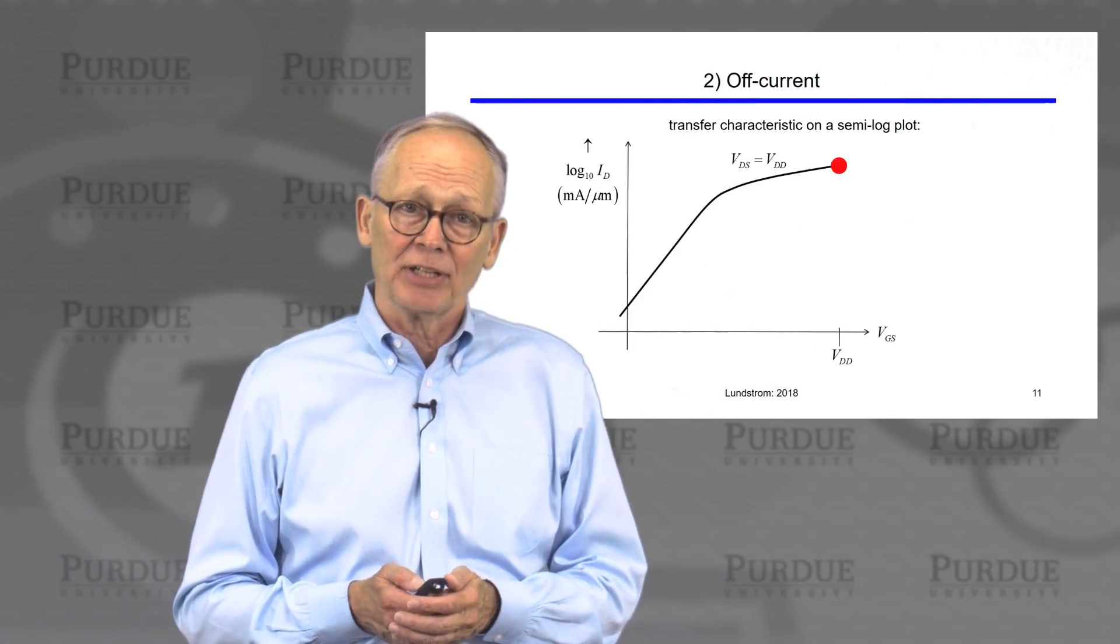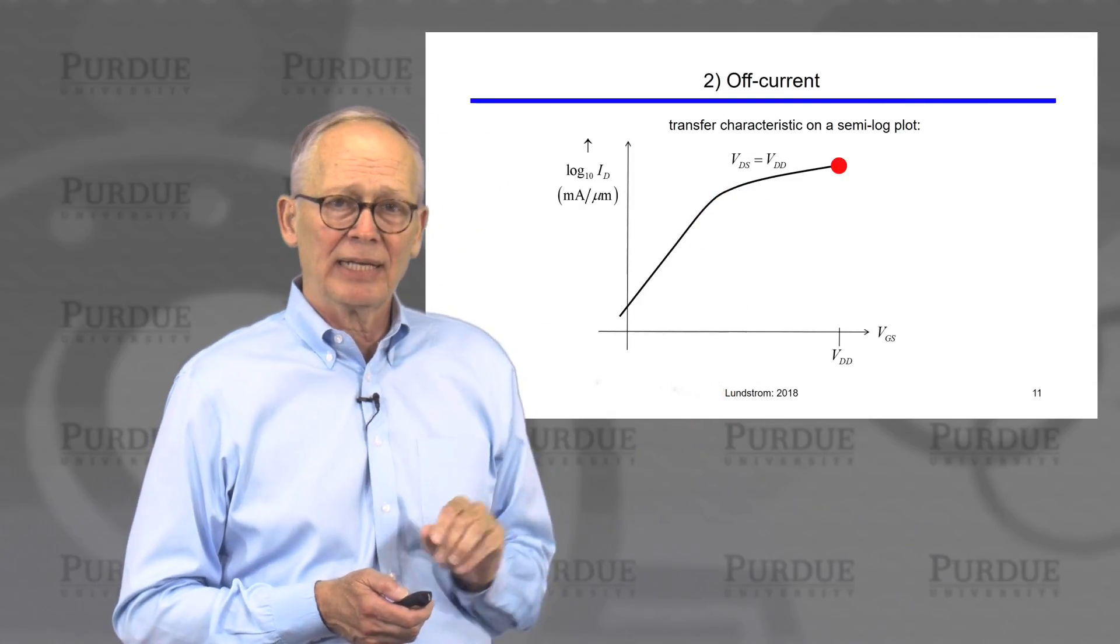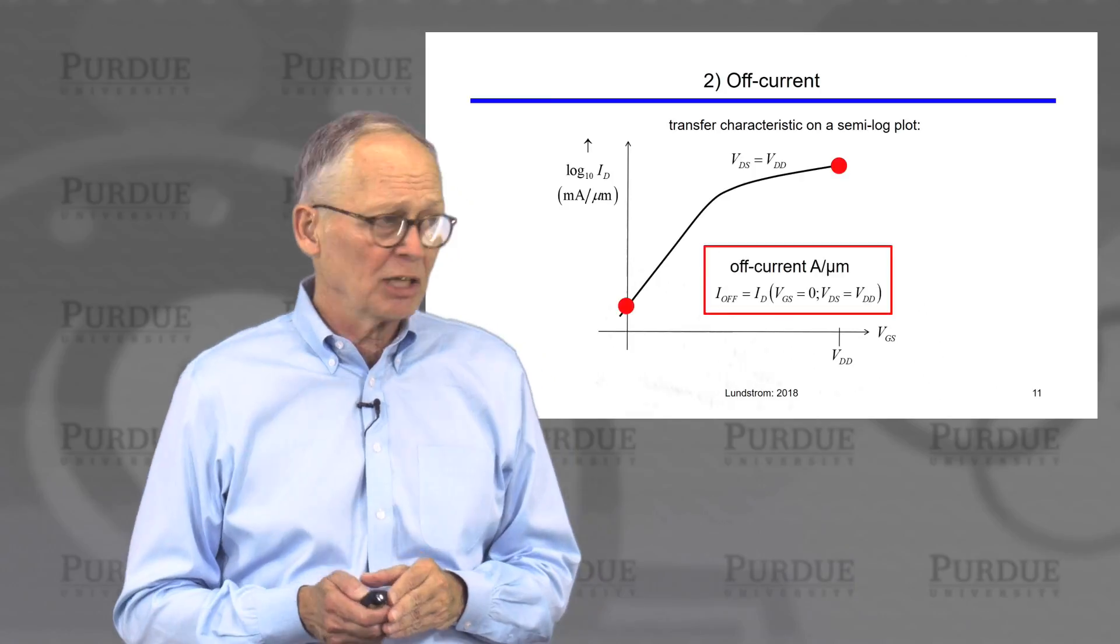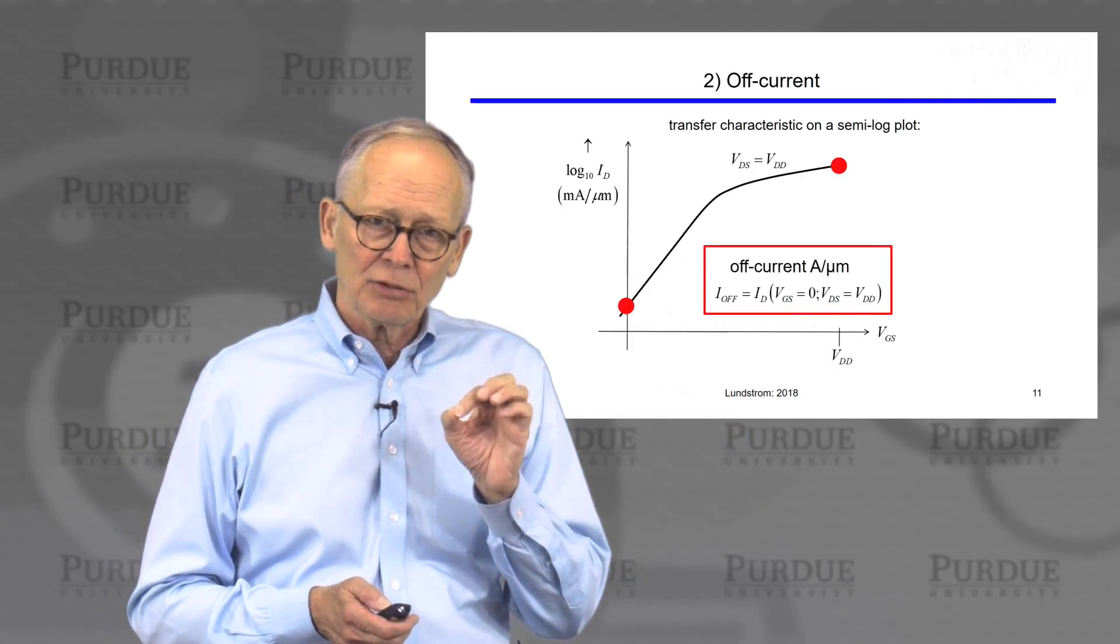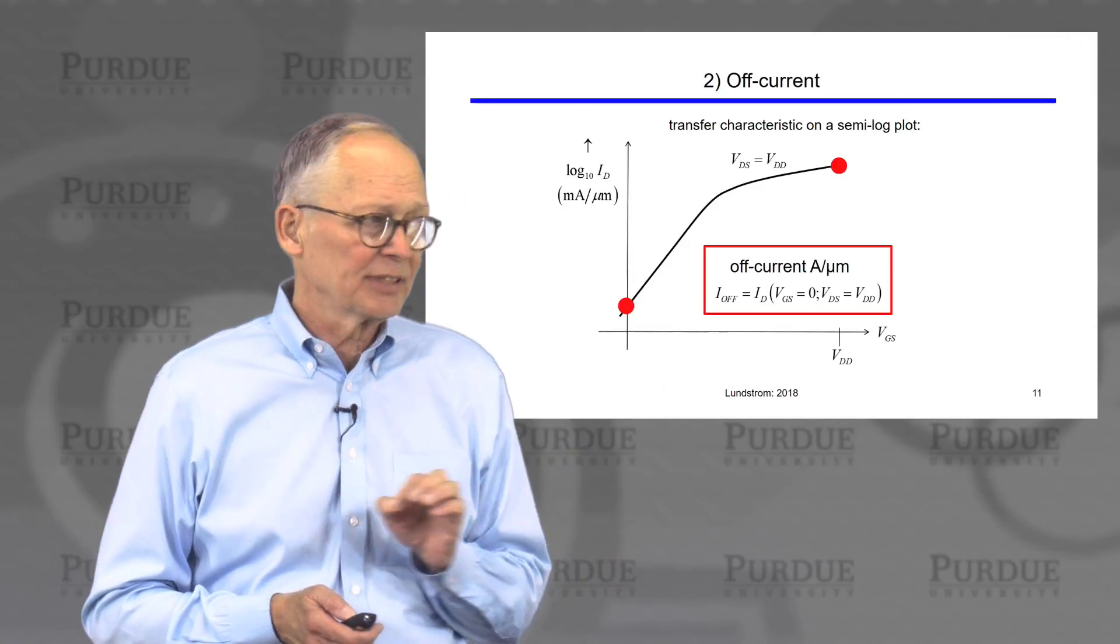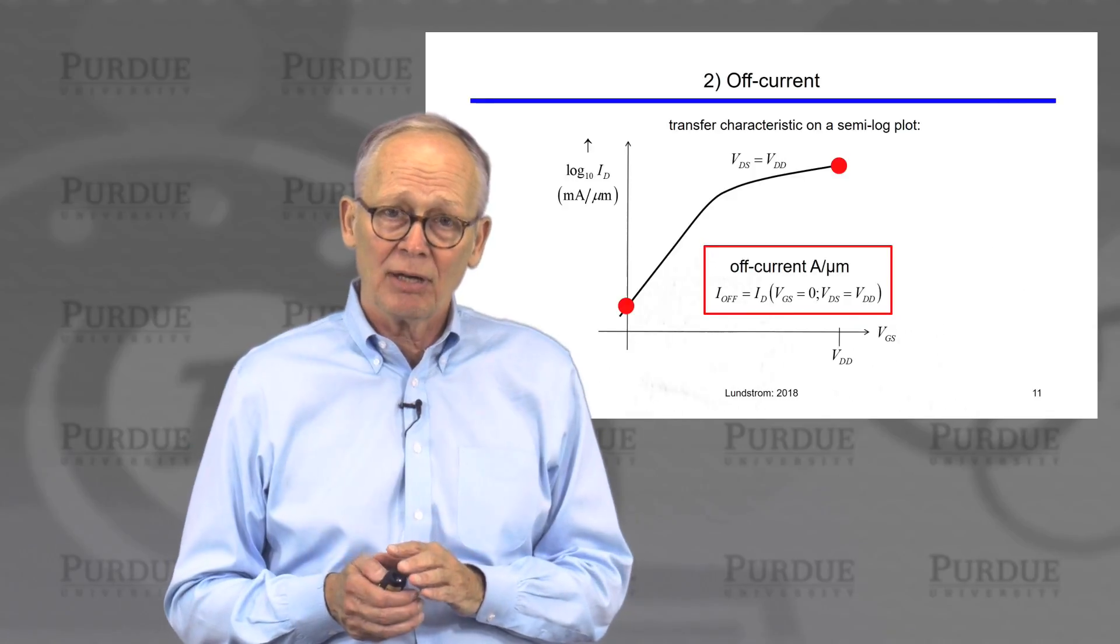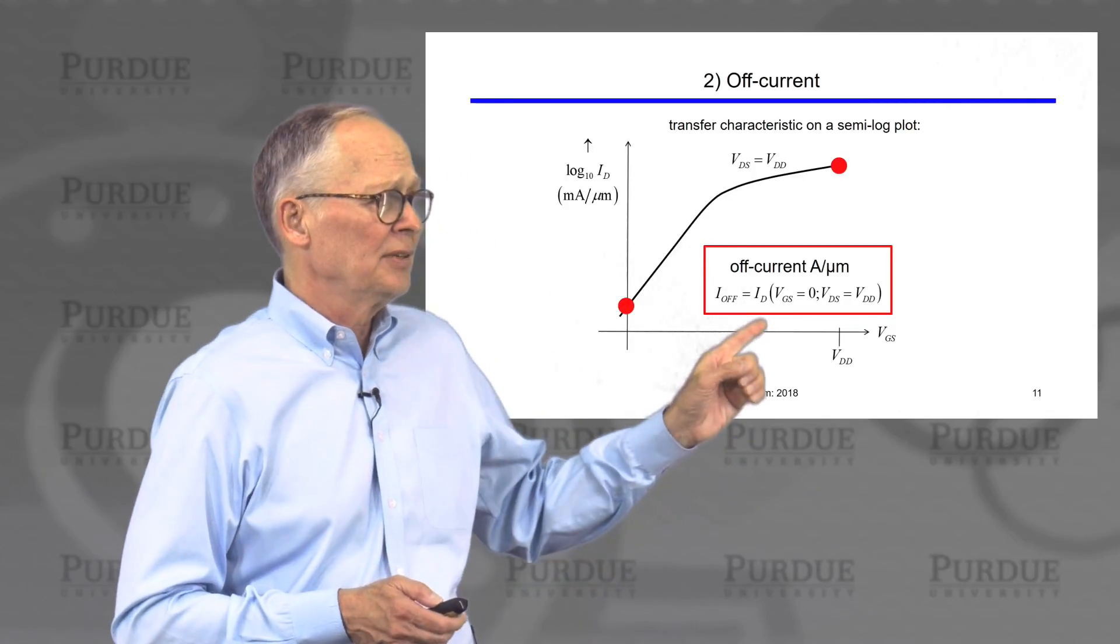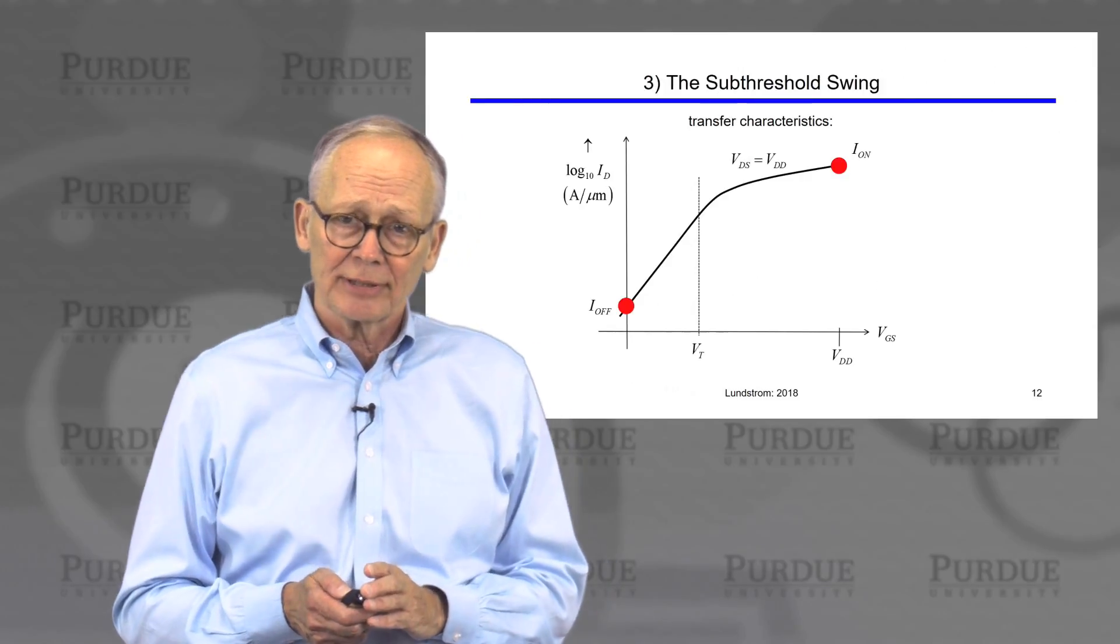We also talked about the off-current. We extract the off-current by plotting the transfer characteristic on a log plot. The off-current is the current when there is zero volts supplied between the gate and the source, but when there's a large voltage applied at the drain. The device is supposed to be off and conducting no current. There will always be some small current. That small current is the off-current.